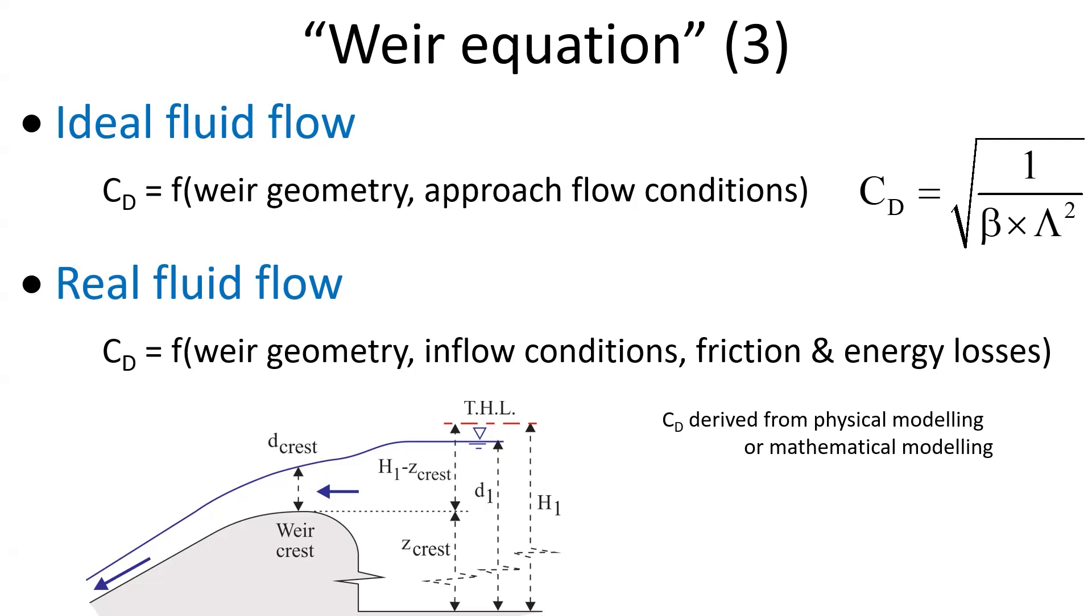In practice, the dimensionless discharge coefficient Cd is derived from physical modeling or mathematical modeling, with Cd about unity for a broad-crested weir, less than 1 for a sharp-crested weir, and greater than 1 for a rounded crest such as an Ogee or circular crest.